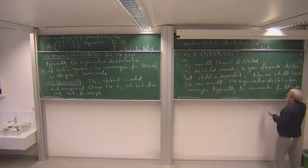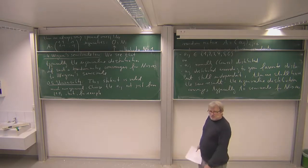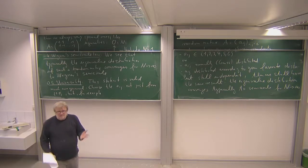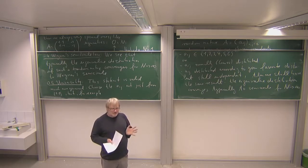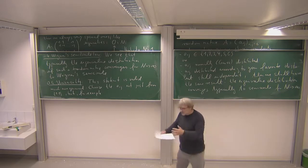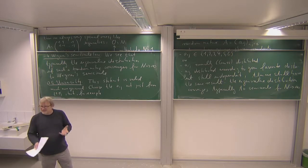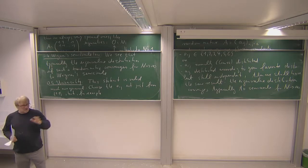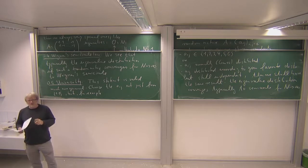The eigenvalue distribution of such a matrix for large n will typically be the semicircle distribution. On the assignments, exercise one really asks you to produce random matrices on a computer algebra system — MATLAB is the one of our choice — and also produce pictures like these. You can play around and see that if you put in other distributions for the entries, you still see the semicircle.